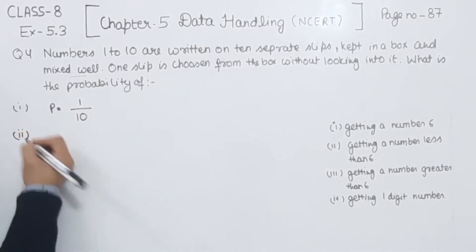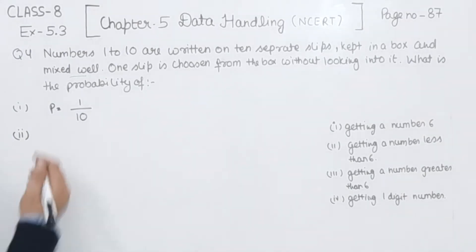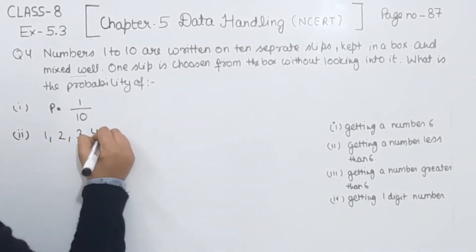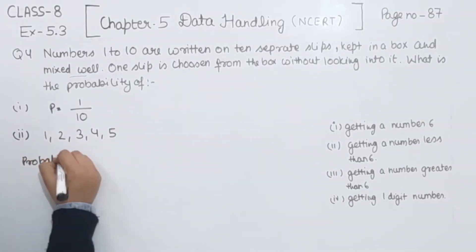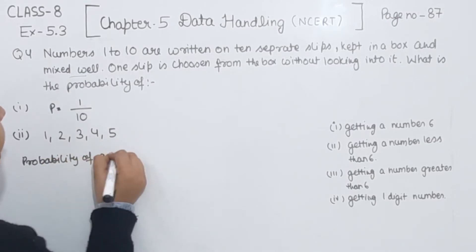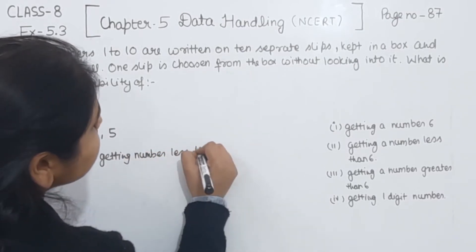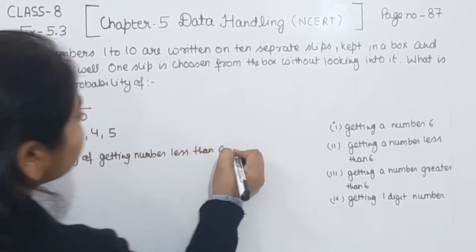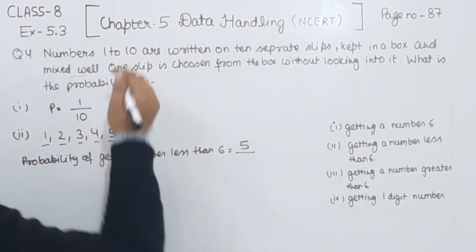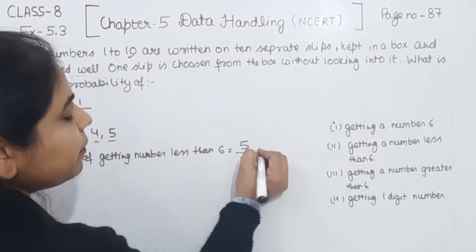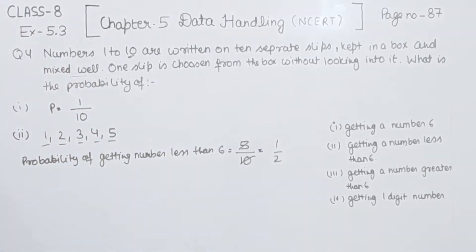Now comes to part 2. In this one, we have to find getting a number less than 6. So the numbers less than 6 will be 1, 2, 3, 4, and 5. So the probability of getting a number less than 6 will have the favourable outcomes 1, 2, 3, 4, 5 — that is 5 — and the total outcomes we have 10. So we are going to simplify this one, so the probability will be 1 by 2.